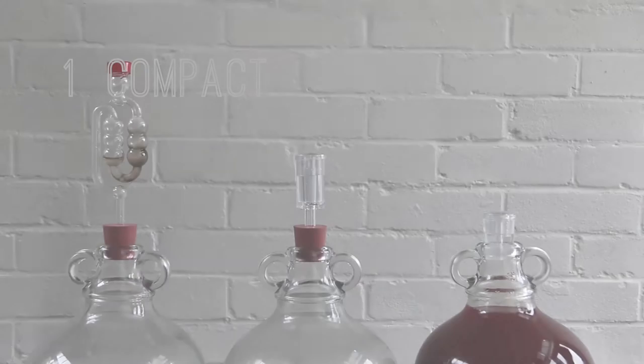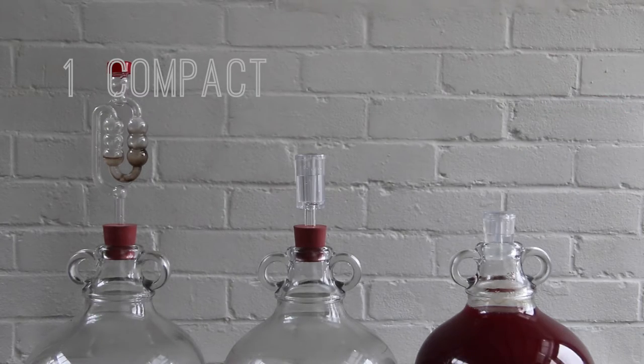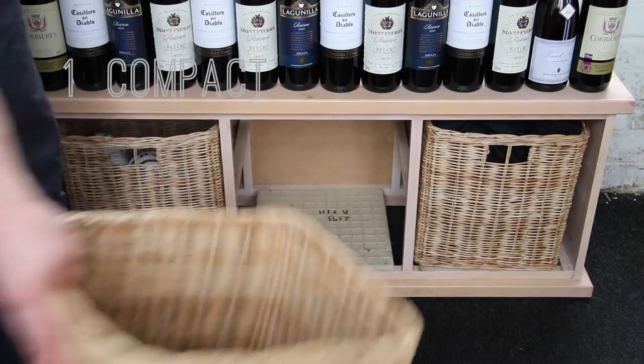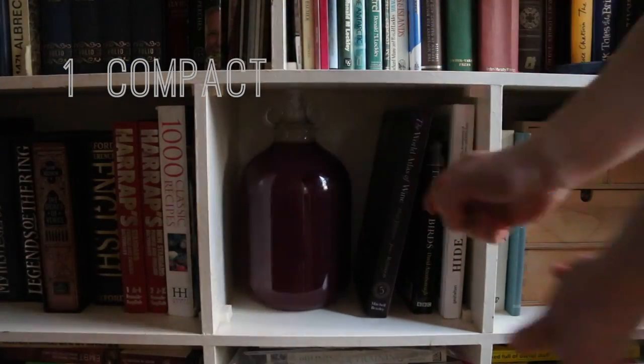Because it combines the bung and airlock into one piece, Block is very compact, sitting only 3cm above the jar. This means that, unlike the current systems, a Demijohn fitted with Block can sit comfortably on most shelves designed to fit large books.